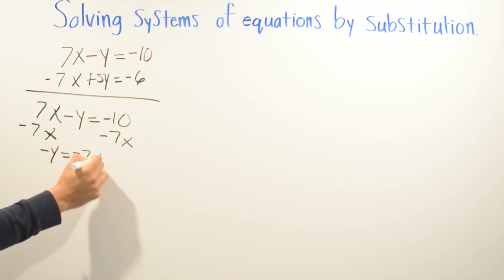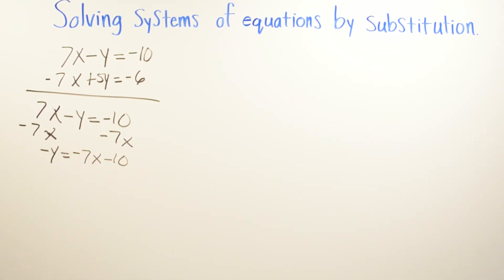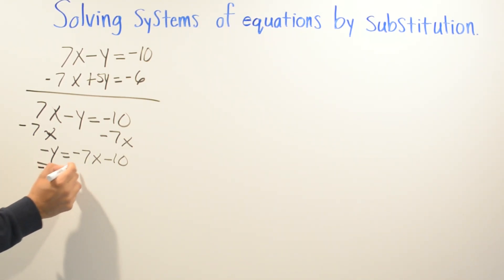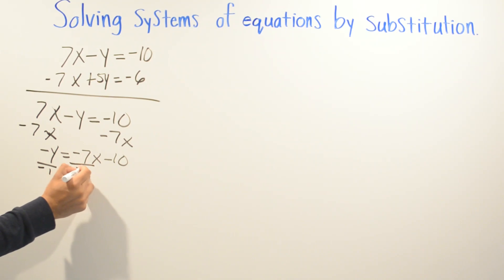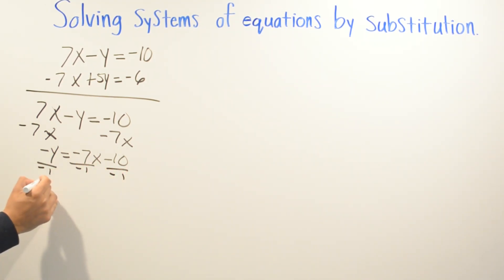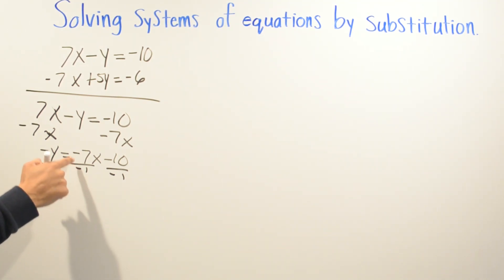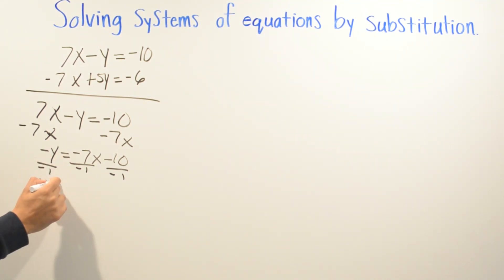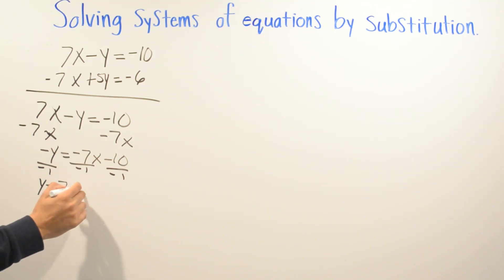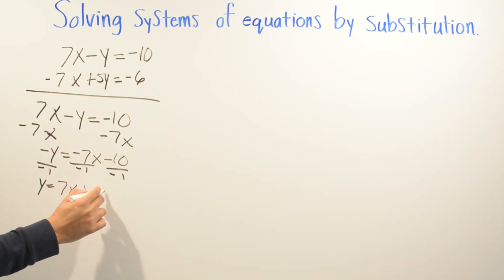Since our variable can never be negative, we divide both sides by negative one. That gives us y equals positive 7x plus 10.